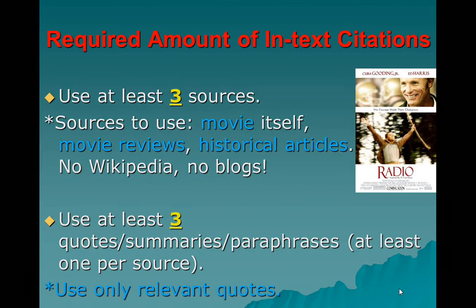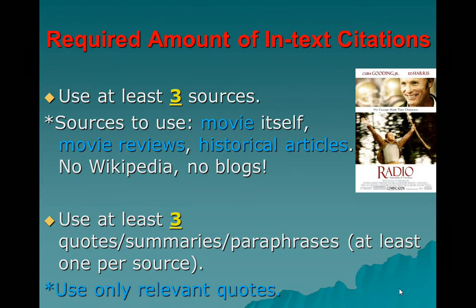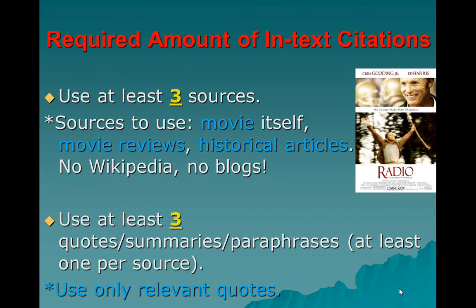For the required amount of in-text citations — and remember, in-text citations means quotes, summaries, and paraphrases — you must have at least three sources, and the text itself counts. So your movie or TV show counts as one, meaning you only need two other sources. These other two can be movie reviews or historical articles, either of which might discuss the facts versus fiction of your movie. You can have as many sources as you want, as long as you have at least two beyond the text itself.